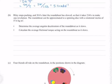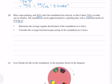Riley stops pushing and 30 seconds later the roundabout has slowed so that it takes 2.04 seconds to make 1 revolution. The roundabout can be approximated to a spinning disc with a rotational inertia of 57.6 kg·m². Determine the average angular deceleration of the roundabout as it slows, and calculate the average frictional torque acting on the roundabout as it slows.